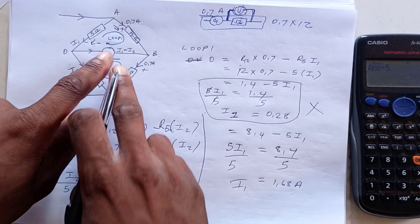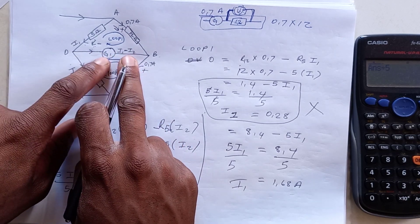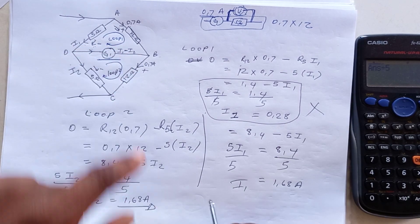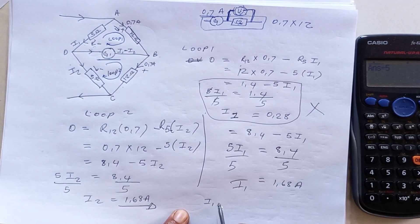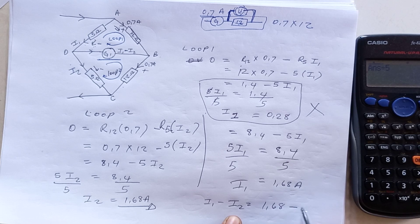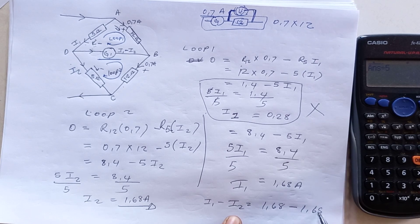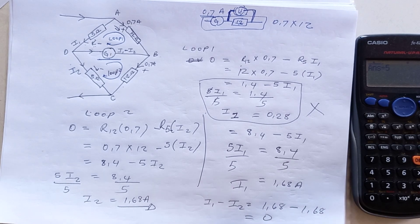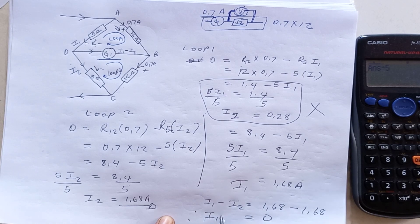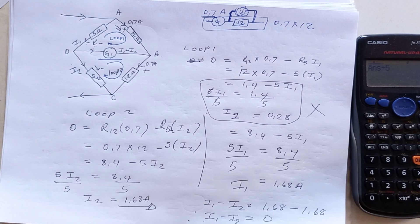So what will be the reading across that galvanometer? Since the current is I1 minus I2, and I1 and I2 are the same, the reading across the galvanometer will be 0. So that is it. I hope you learned something here.